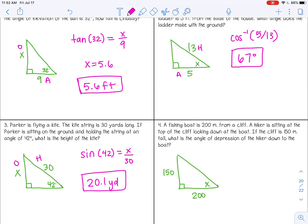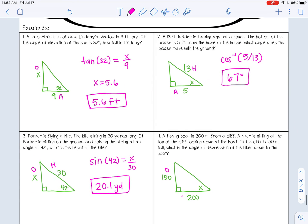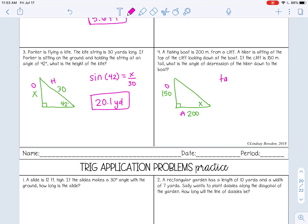So let's label our sides, opposite and adjacent. So tangent, inverse tangent since I'm finding an angle, 150 over 200. And that gives me about 37 degrees.